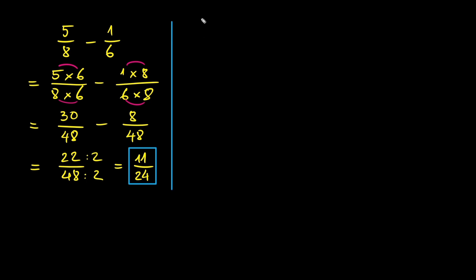Now, let's try another example. Let's subtract 5 sevenths and 1 sixth. The common denominator is 7 times 6, which is 42. We multiply the first fraction by 6 over 6, and the second fraction by 7 over 7.